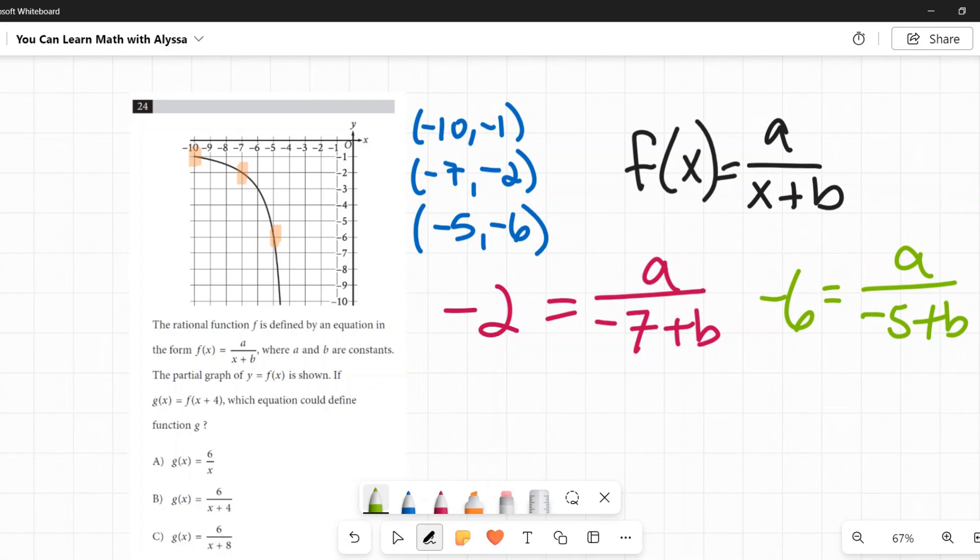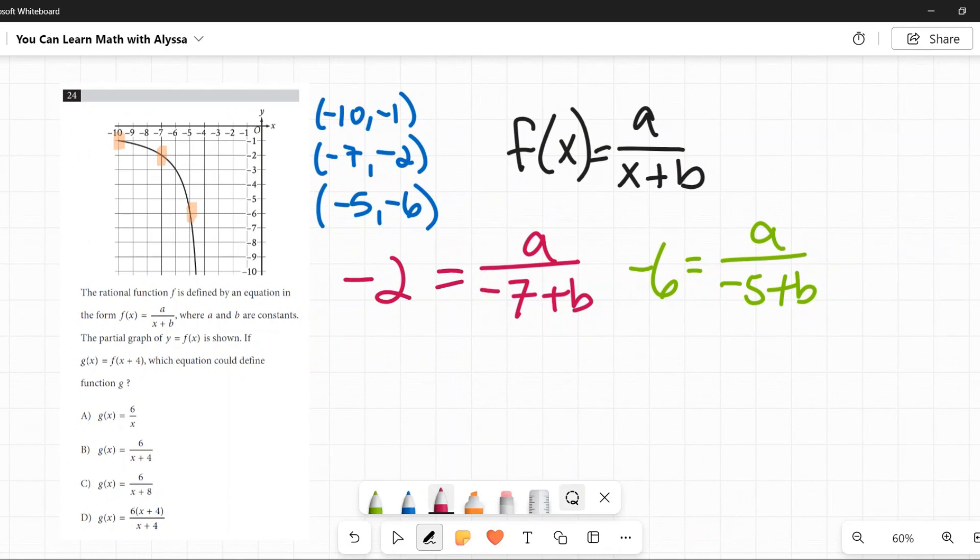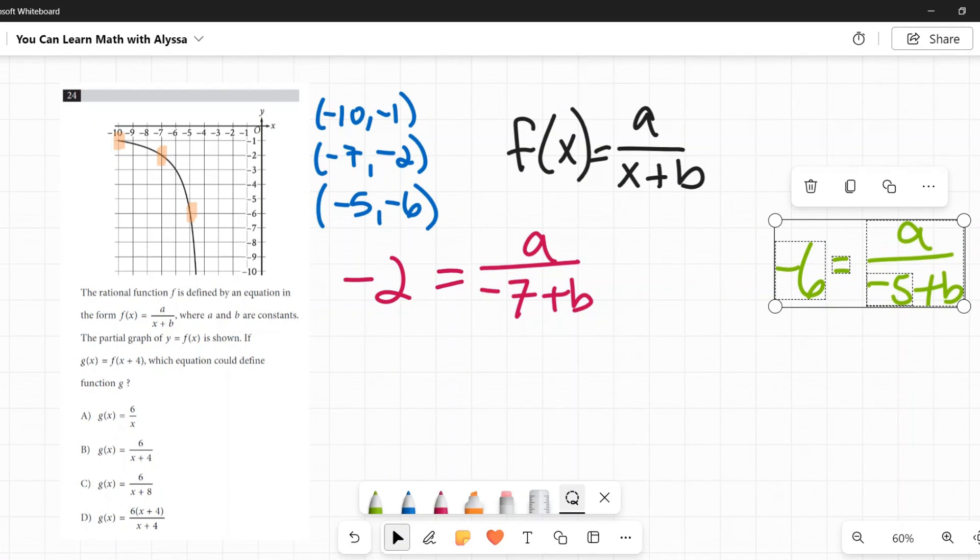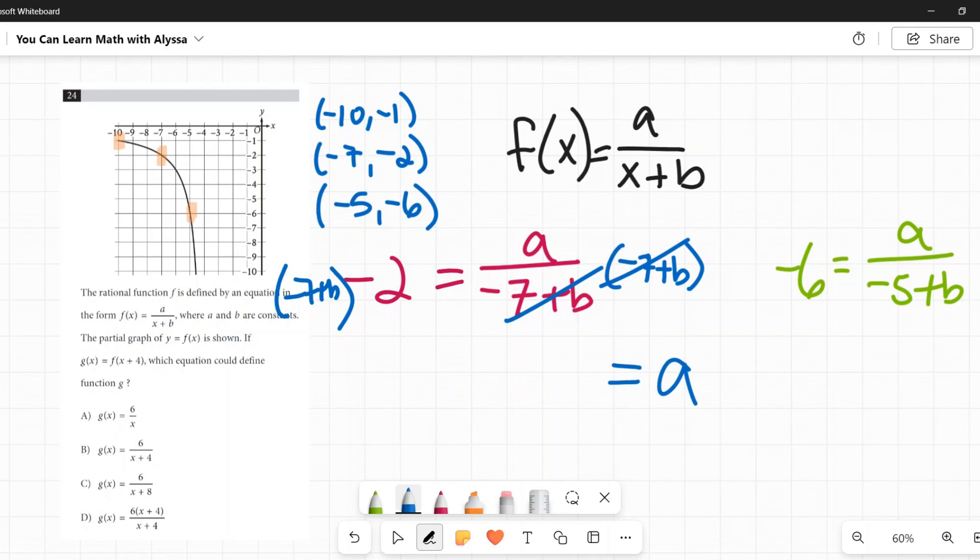Now I have two equations. I am going to get rid of these fractions. So first here on the left, to get rid of this fraction, I need to multiply both sides by negative 7 plus b. So that's what I'm going to do. So I'm going to multiply both sides by negative 7 plus b. On the right-hand side, those cancel out. And I am just left with a. On the left side, I'm going to distribute negative 2 times negative 7 is positive 14. And negative 2 times positive b is a negative 2b. So now I have 14 minus 2b equals a.